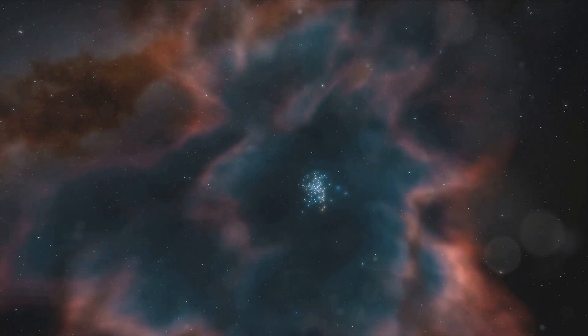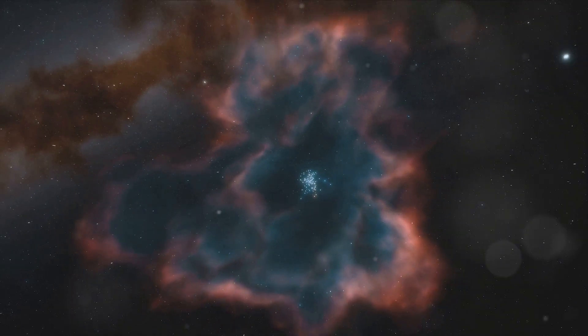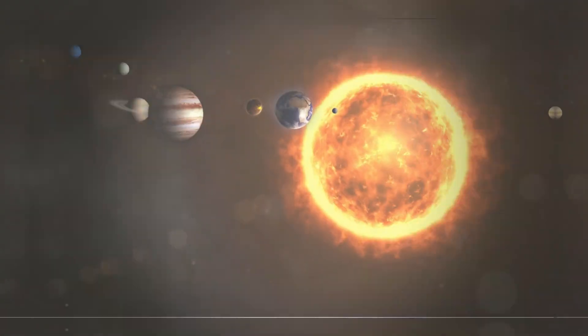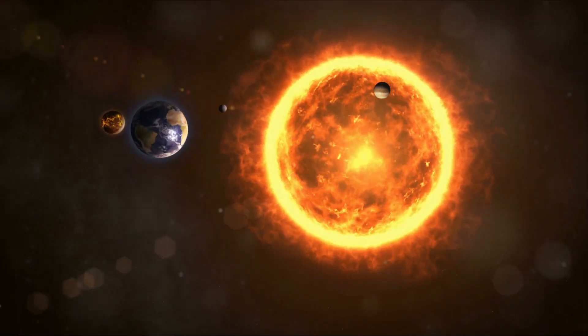What remains will be the hot, dense core of the Sun, now a white dwarf, slowly cooling over billions of years. The Sun's evolution will dramatically alter the conditions of the other planets in the solar system.